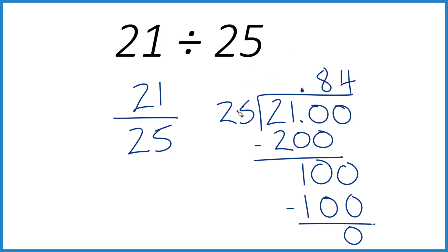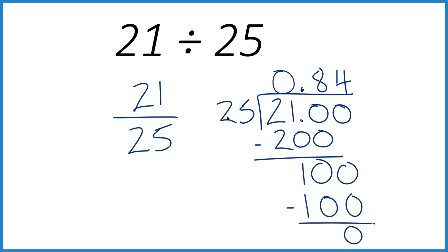21 divided by 25 is 0.84. Let's put a 0 out here so we don't forget our decimal point. And 21 divided by 25 is 0.84. If you multiply 0.84 times 25, you'll get 21.